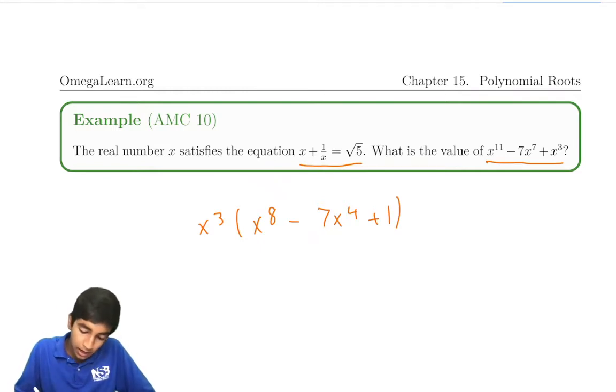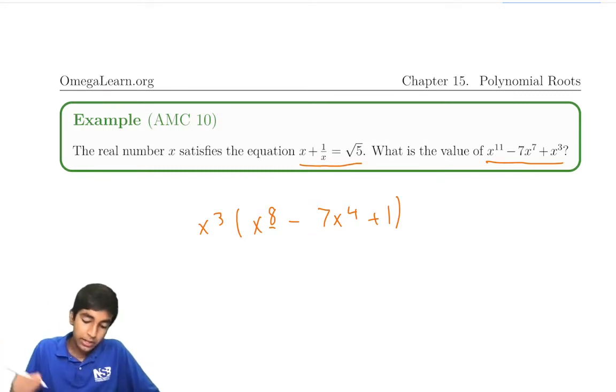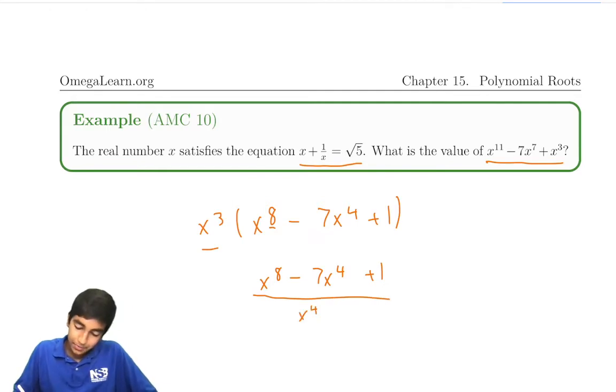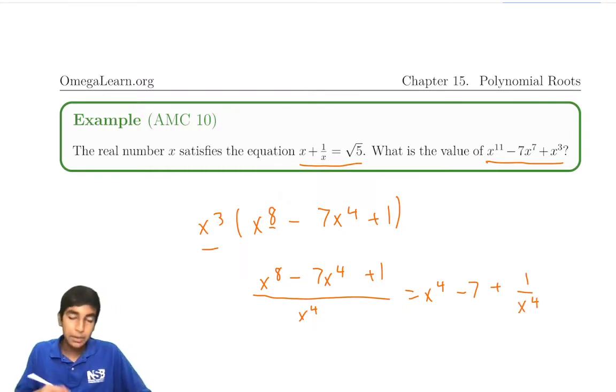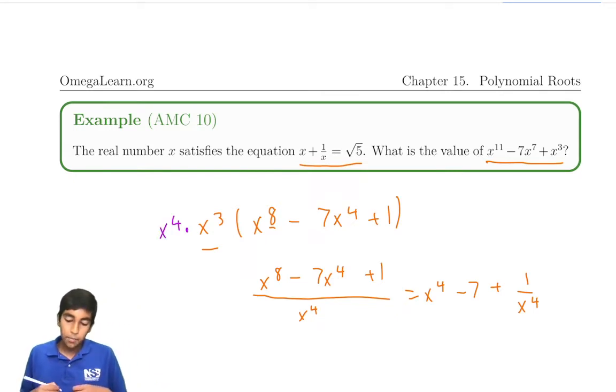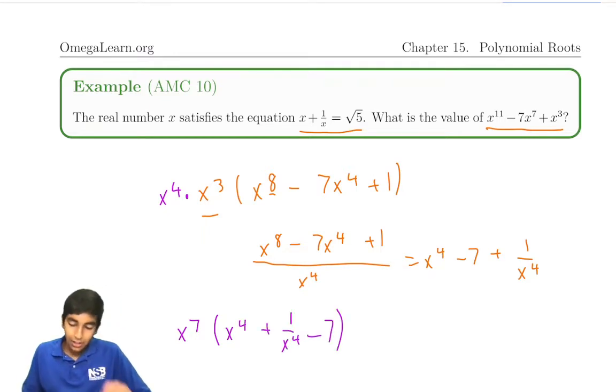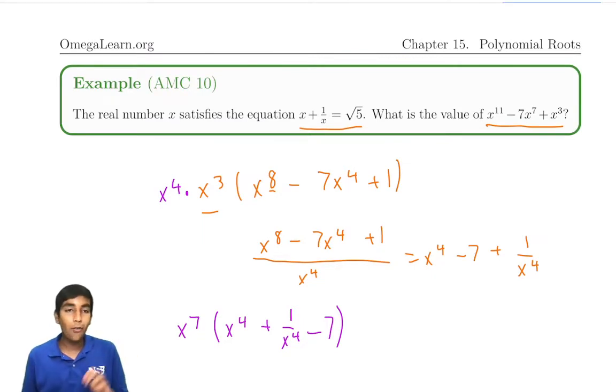Now we can do the standard symmetric polynomial trick. Because the degree is 8, we divide by x⁴ to just this part. We can leave the x³ on the side. So let's divide: (x⁸ - 7x⁴ + 1)/x⁴. We get x⁴ - 7 + 1/x⁴. And because we divided by x⁴, let's also multiply by x⁴ over here. So now, essentially what we have is x⁷ times (x⁴ + 1/x⁴ - 7).